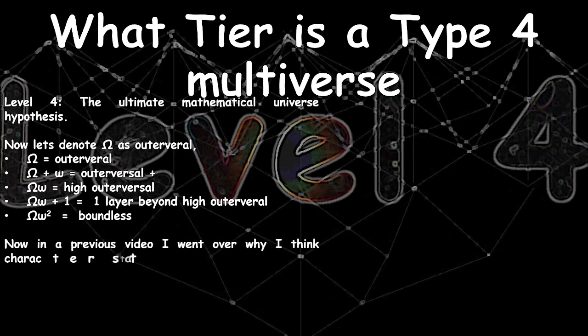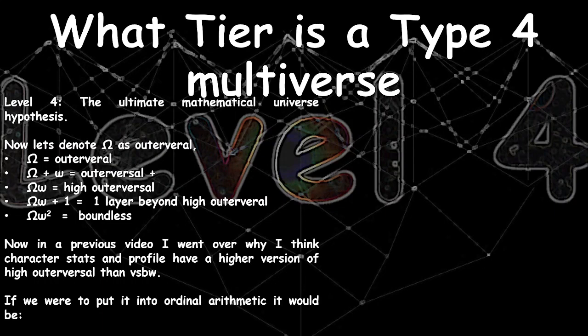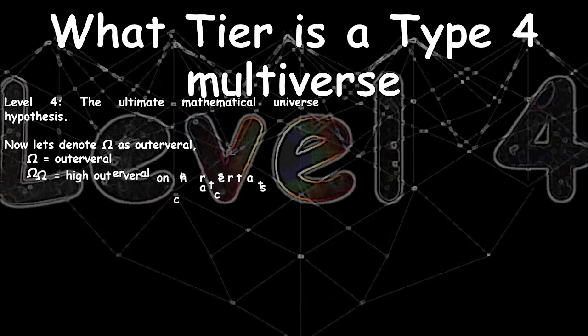In a previous video I went over why character stats and profile have a higher version of high outerversal than Versus Battle Wiki. In ordinary arithmetic, the character stats and profile high outerversal would be capital Omega to the capital Omega. This is interesting as it shows we can iterate layers into capital Omega as well — so imagine doing an infinite multiplication of capital Omega.